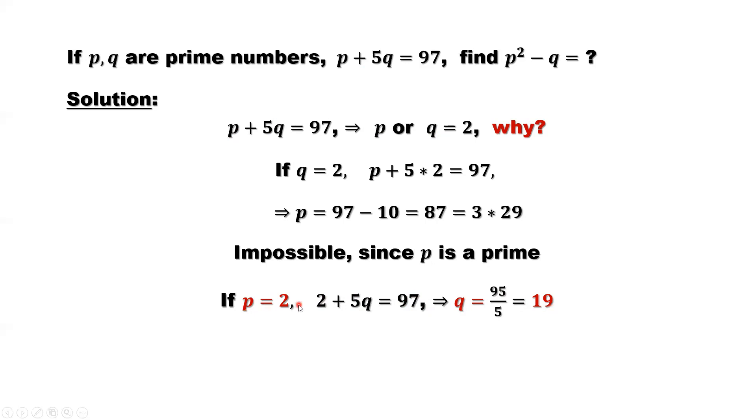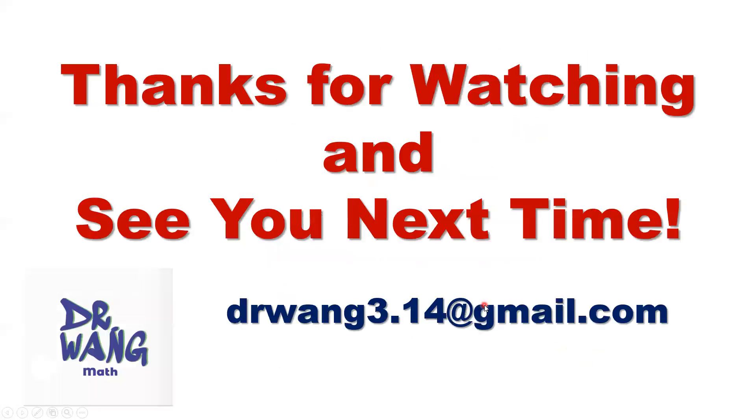So here, when p equals 2, q equals 19. This given condition is satisfied. And both are prime numbers. So we can find p squared minus q. Just replace p by 2, q by 19. So here, that's 2 squared is 4. 4 minus 19 is negative 15. Negative 15 is the final answer. That's all. Thanks for watching and see you next time.